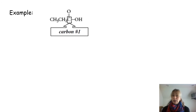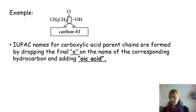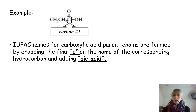Here is a carboxylic acid. We see the carboxyl group and we begin our numbering at the carbonyl carbon — carbon number one. So this would be one, two, three — a three-carbon carboxylic acid. The IUPAC names for carboxylic acid parent chains are formed by dropping the final E of the alkane name and then adding 'oic acid.' So propane becomes propanoic acid.